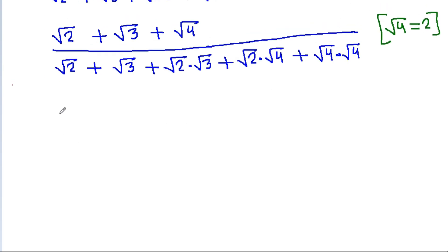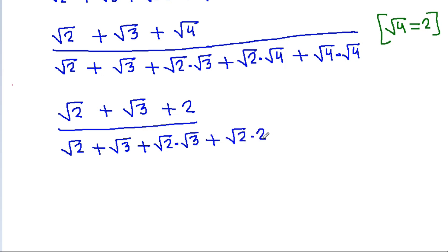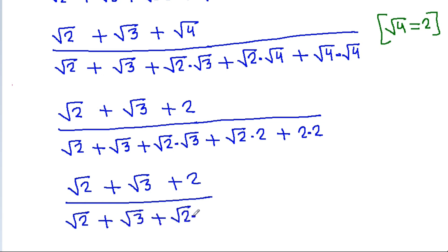This simplifies to: √2 + √3 + √3 + √2 in the numerator, and √2 + √3 + (√2 × √3) + (√2 × √3) + √2 in the denominator.